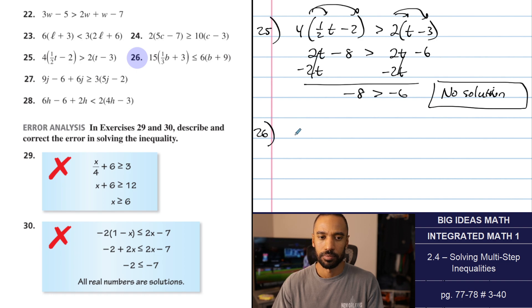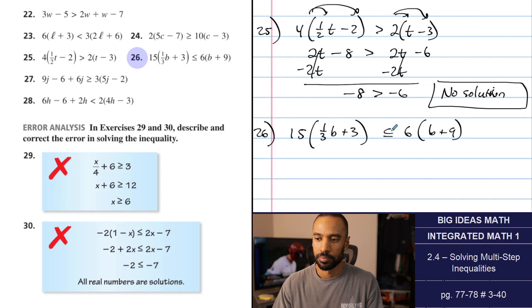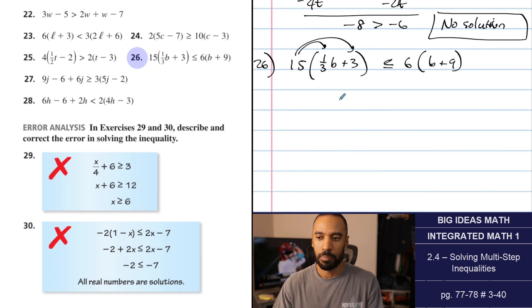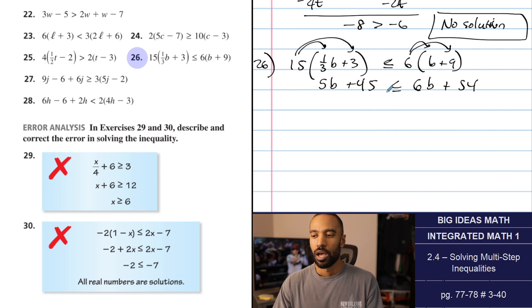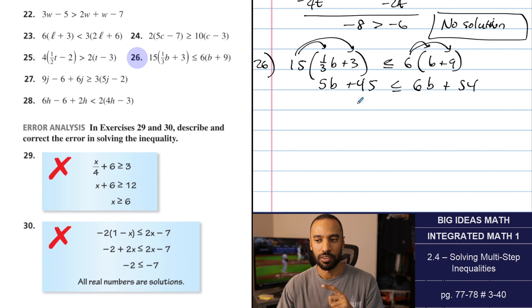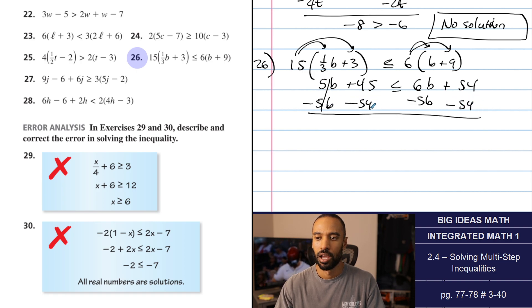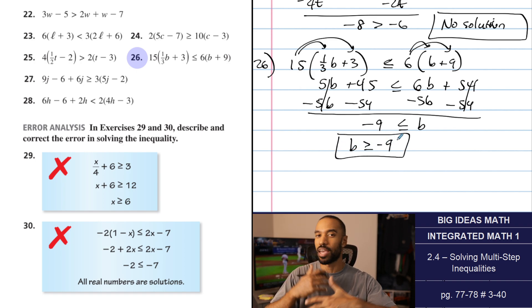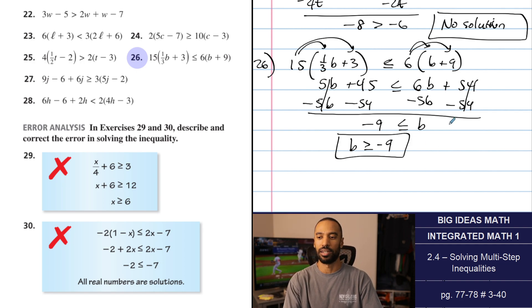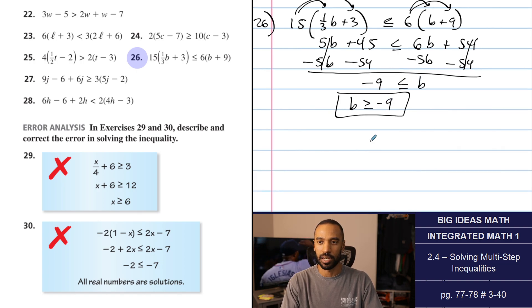Number 26: 15 times one-third B plus 3 is less than or equal to 6 times B plus 9. Fifteen times one-third is 5, and 15 times 3 is 45. This one's not a special case. Here's the tradeoff: either positive on the right or negative on the left. This time, let's go positive on the right — subtract 5B from both sides, subtract 54 over here. We get B is greater than or equal to negative 9. Rewriting B on the left afterward gives B is greater than or equal to negative 9. That's infinitely many solutions — just not all real numbers.